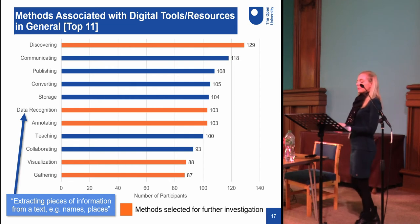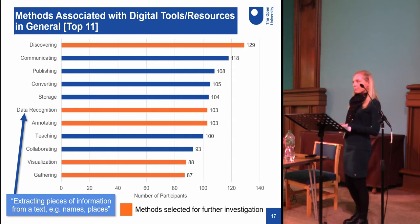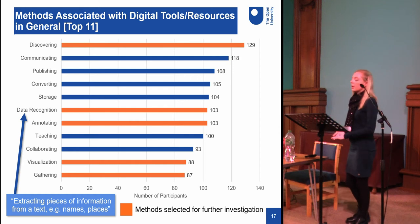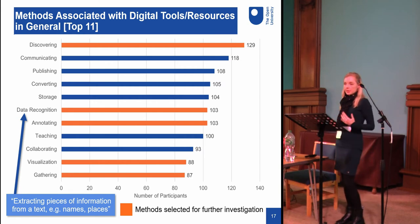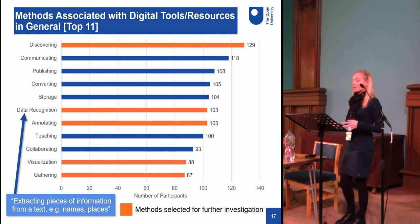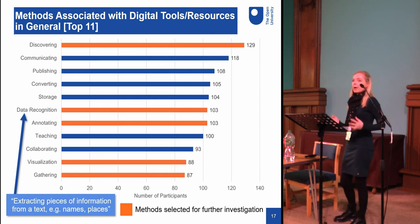Returning to the question about digital research methods using TaDiRAH, the top 11 methods associated with digital tools and resources generally are shown on this graph — I use the top 11 because there's a big gap between numbers 11 and 12. The top five methods are discovering, communicating, publishing, converting, and storage. However, the next two — data recognition and annotating — are more specific yet ranked even higher than other generic activities such as teaching and collaborating. Data recognition was rephrased in the survey as 'extracting pieces of information from a text, e.g. names and places.' Method number 10 is visualization, which included production of maps, graphs, and 3D images.